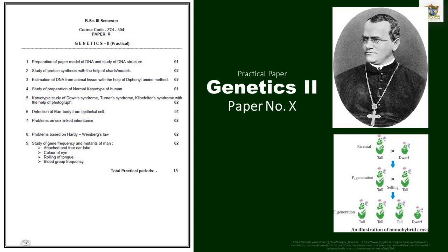This is your second practical paper, Genetics 2 with paper number 10. This will include preparation of a paper model of DNA, estimation of DNA and study of protein synthesis. Along with it, there will be study of different syndromes, study of Barr body, mutants of man and genetic problems.